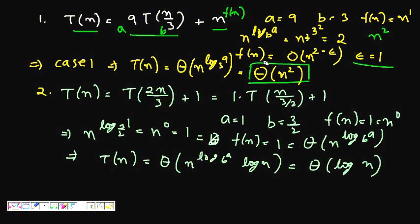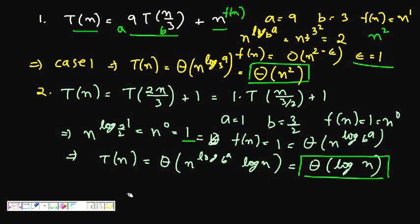Next example: T(N) = T(2N/3) + 1, which we write as 1·T(N/(3/2)) + 1. So A = 1, B = 3/2, F(N) = 1 = N^0. We compute N^(log_{3/2}(1)) = N^0 = 1. Since F(N) = 1 = N^(log_B(A)), this is Case 2, giving T(N) = θ(N^0 · log N) = θ(log N).